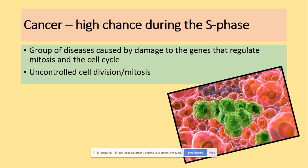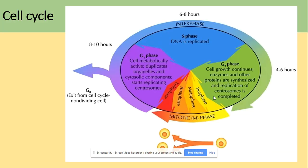So what is cancer? Cancer is a group of diseases caused by damage to the genes that regulate mitosis and the cell cycle, and it's caused by uncontrolled cell division — uncontrolled mitosis. The highest chance of cancer development takes place during the S phase of the cell cycle because this is where DNA replicates. Looking at the cell cycle, we have the interphase, which is made of G1, S, and G2 phase, and we have cell division, which could be mitosis or meiosis.